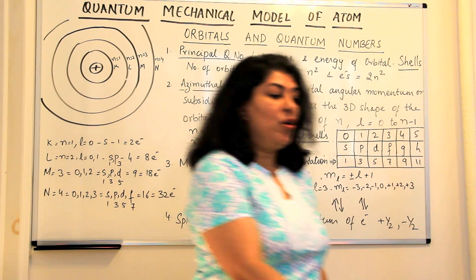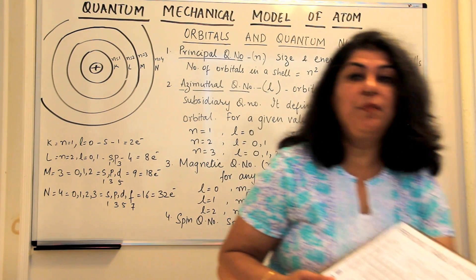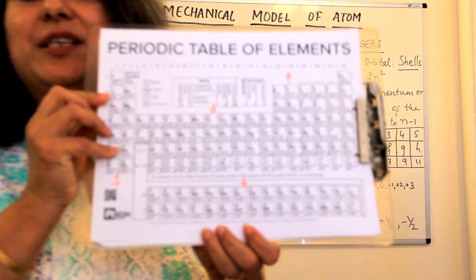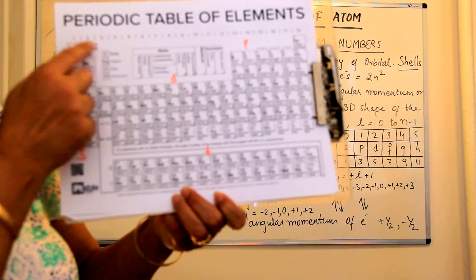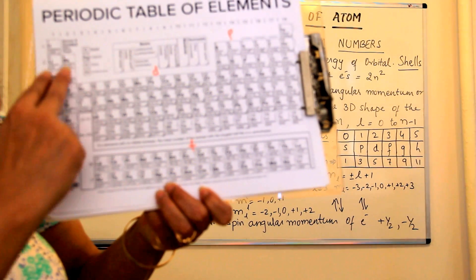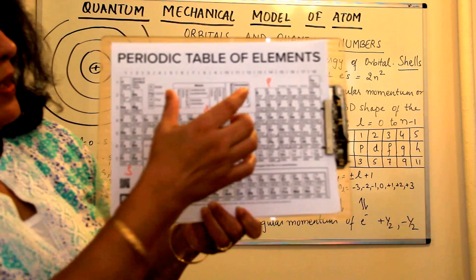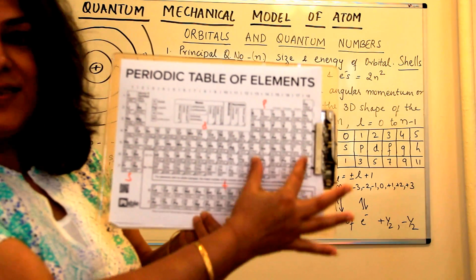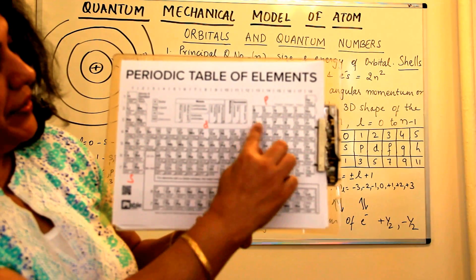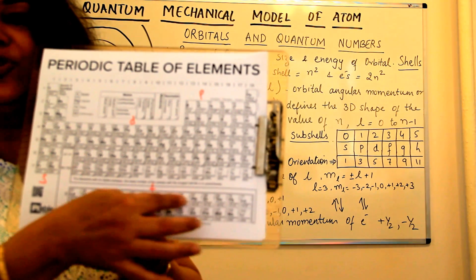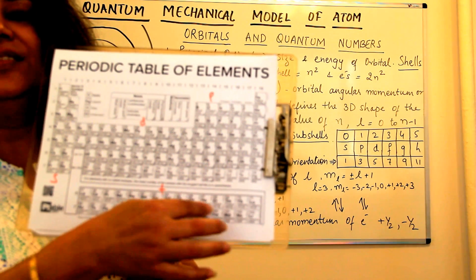Do you know that even the periodic table of elements has been prepared keeping in mind these subshells and the orbitals? These two are the rows of elements in which the S orbitals are being filled up. These are the P orbitals. These here are the D orbitals. And at the bottom you have 14 elements which are the F orbitals.